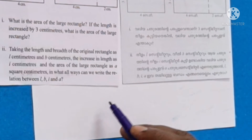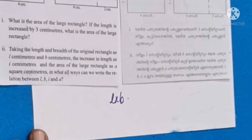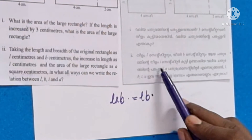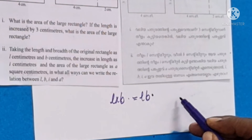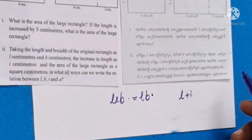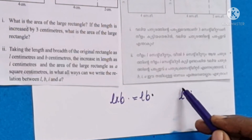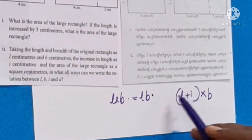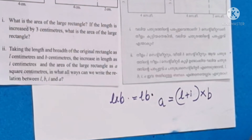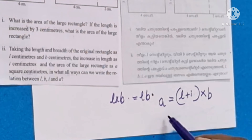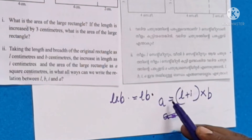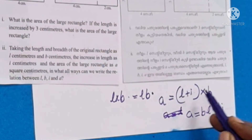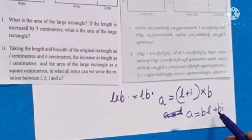Now, looking from L to B, if we take the length as L, breadth as B, and increase as I, the area of the large rectangle is (L plus I) times B, which expands to BL plus BI.